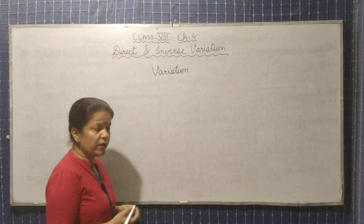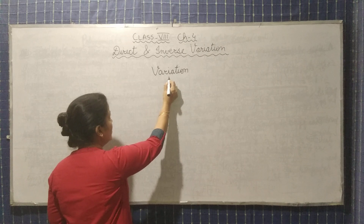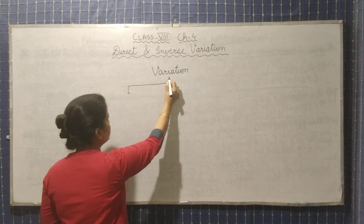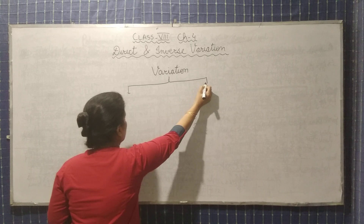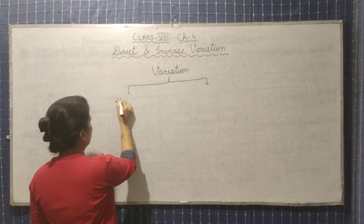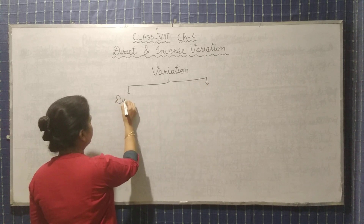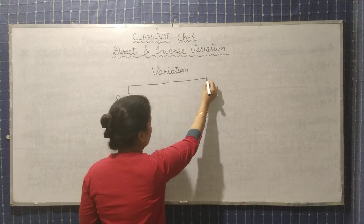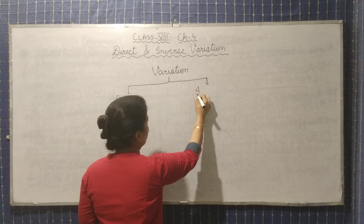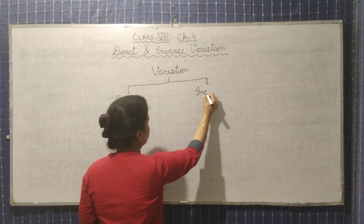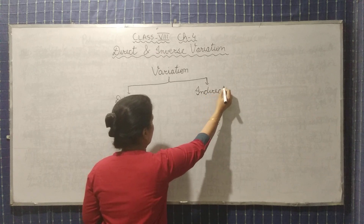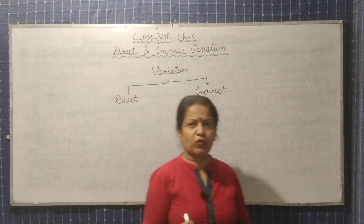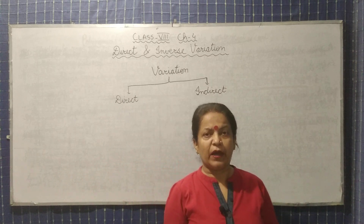Now, variation is of two types. One is direct variation and another is indirect variation. First of all, let's talk about direct variation.